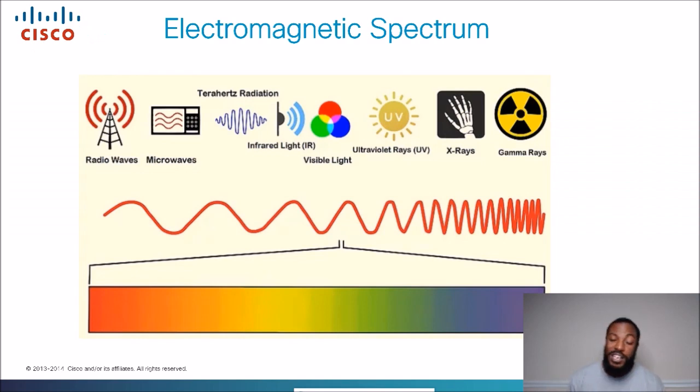Before we even get further into radio frequencies, we need to do a review on what we did in the non-overlapping channels for Wi-Fi. We talked about the electromagnetic spectrum. The electromagnetic spectrum is basically a scale of how strong electromagnetic waves can be and what devices or things fall into those categories. If you look at this picture, on the left-hand side you got radio waves. As you go along towards the right, you got microwaves, then terahertz radiation which includes infrared light, then visible light, ultra rays, gamma rays, x-rays, etc.